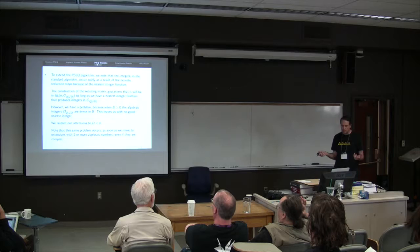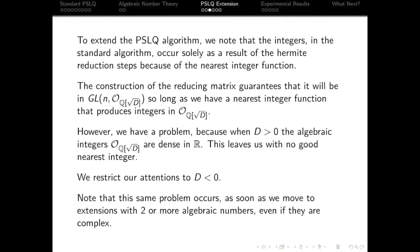Okay, so to extend the algorithm, we need to note that the integers in the standard algorithm were all brought in through the Hermite reduction, and they were brought in through the Hermite reduction in turn through the nearest integer function. The good news is, the construction of the reducing matrix through that argument I explained, we can guarantee that the Hermite reduction will still be guaranteed to be in GLN of our appropriate integer field, because we had invertible elements down the diagonal and it's lower trapezoidal. So that's good, that just works for free out of the box.